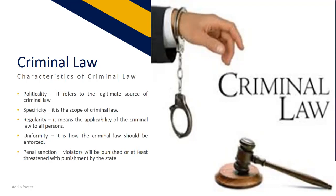When criminal laws are created, they should apply not only to men who violate them but also to women, or vice versa. Uniformity refers to how criminal law should be enforced — ideally the law should be administered without regard for the status of a person, whether the offender is young or old, rich or poor. The criminal law should be enforced uniformly. Penal sanction means violators will be punished or at least threatened with punishment by the state. There would be no point in enacting criminal laws if their violation were not responded to by punishment or threat of punishment.